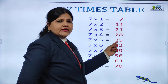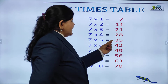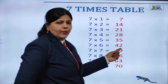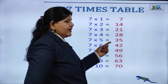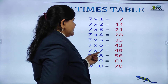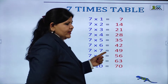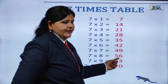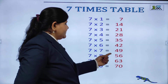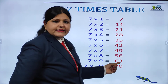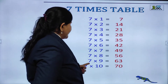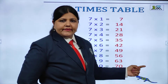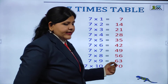7 fives are 35. 7 fives are 35. 7 sixes are 42. 7 sixes are 42. 7 sevens are 49. 7 sevens are 49. 7 eights are 56. 7 eights are 56. 7 nines are 63. 7 nines are 63. 7 tens are 70. 7 tens are 70.